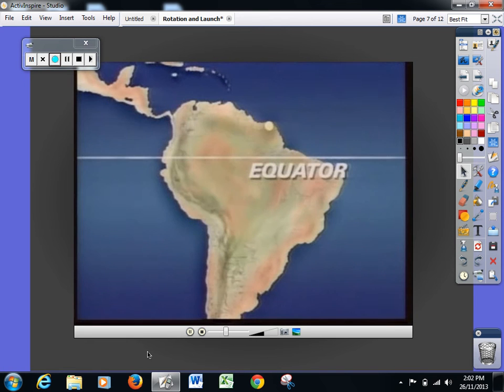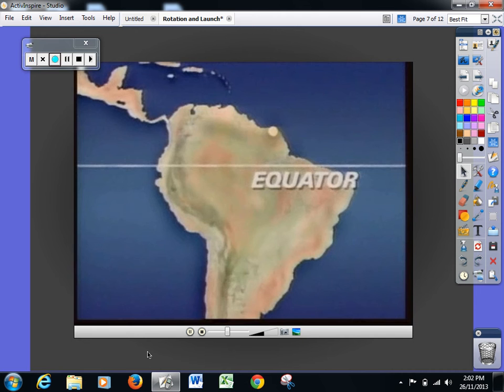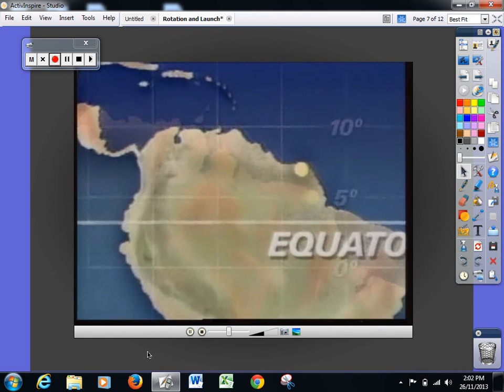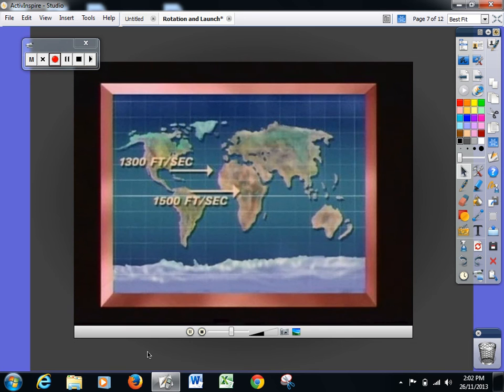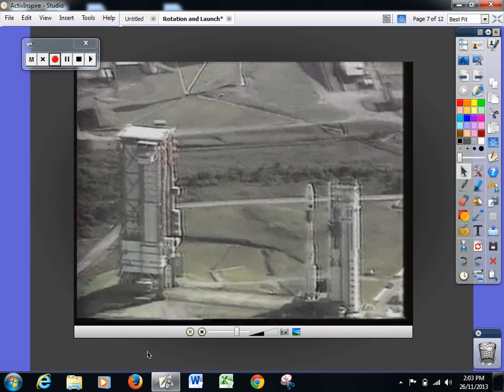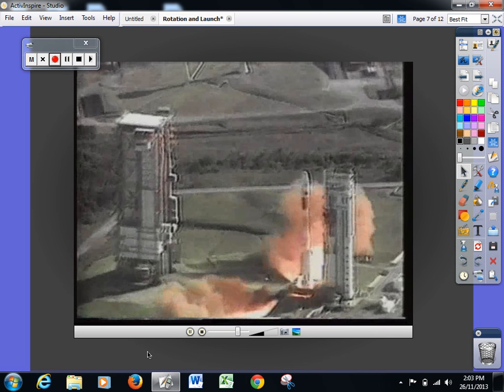This is why the European Space Agency launched their satellites from near the equator in Guyana. This gives them a 200 km per hour advantage over the NASA launch site in Florida. So rockets leaving from Guyana need to carry less fuel.